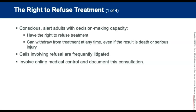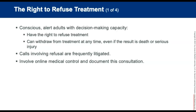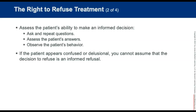Adults who are conscious, alert, and appear to have decision-making capacity have the right to refuse treatment, even if the result is death or serious injury. They can withdraw from treatment at any time. Understand that calls involving refusal of treatment are commonly litigated in EMS and require you to proceed very cautiously. Involve online medical control and document this consultation. A patient, parent, or caregiver decision to accept or refuse treatment should be based on information you provide: your assessment of what might be wrong, a description of the treatment you feel is necessary, any possible risks of treatment, the availability of alternative treatments, and the possibility of consequences of refusing treatment.